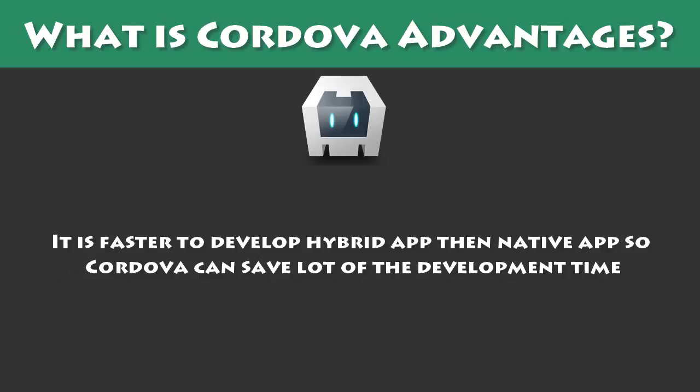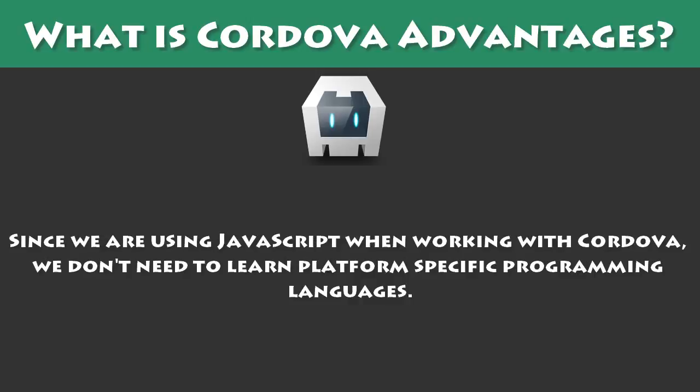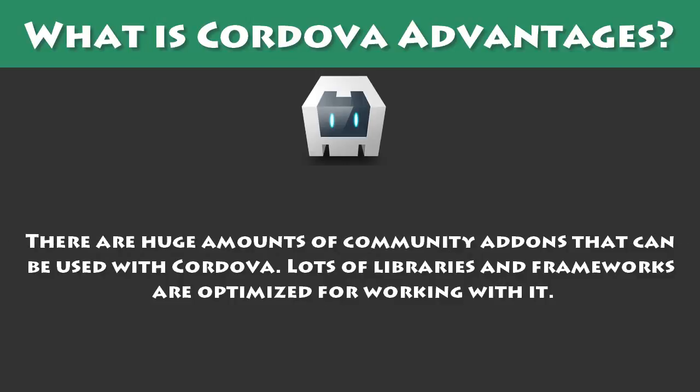It is faster to develop hybrid apps than native apps so Cordova can save a lot of development time. Since we are using JavaScript when working with Cordova, we don't need to learn platform-specific programming languages. There are huge amounts of community aids that can be used with Cordova, and lots of libraries and frameworks are optimized for working with it.